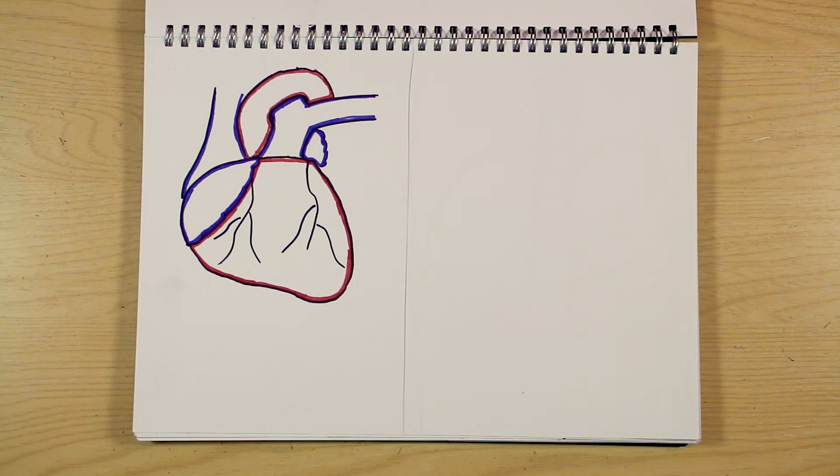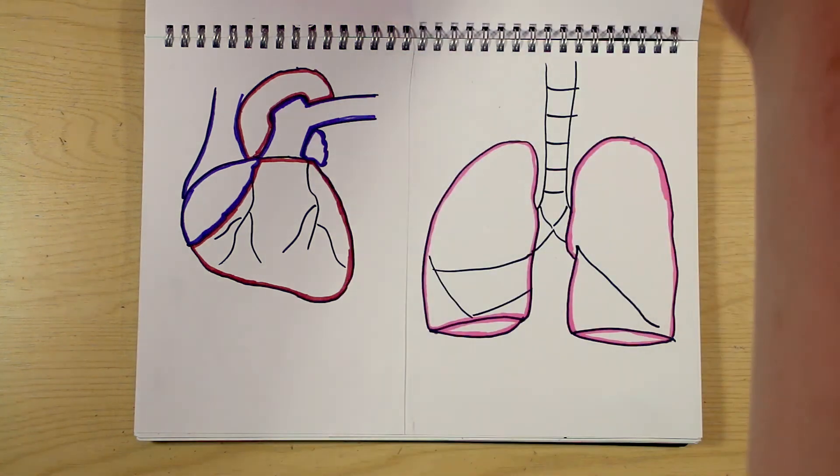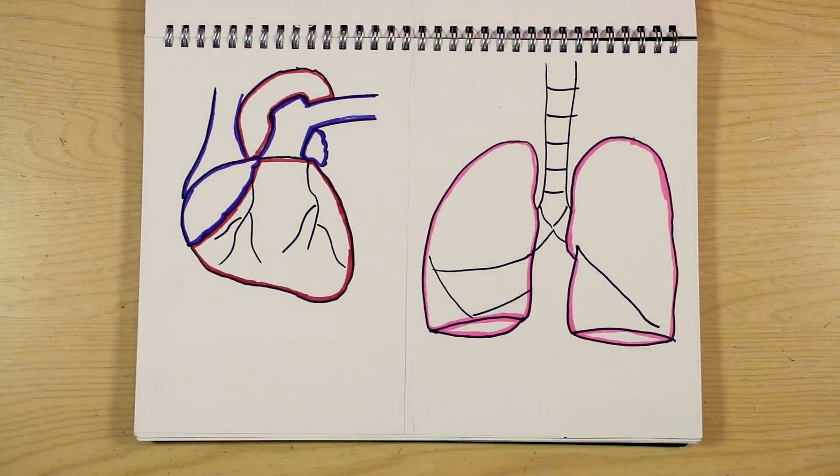The right ventricle only pumps blood to the lungs, so it doesn't need to generate as high a pressure as on the left, but a damaged right ventricle can also cause major problems. If all is working as it should, your lungs then fill this blood with oxygen while removing carbon dioxide, ready to start the circuit all over again.